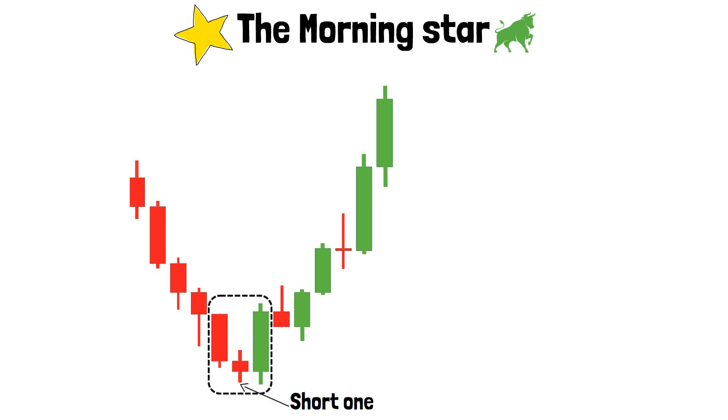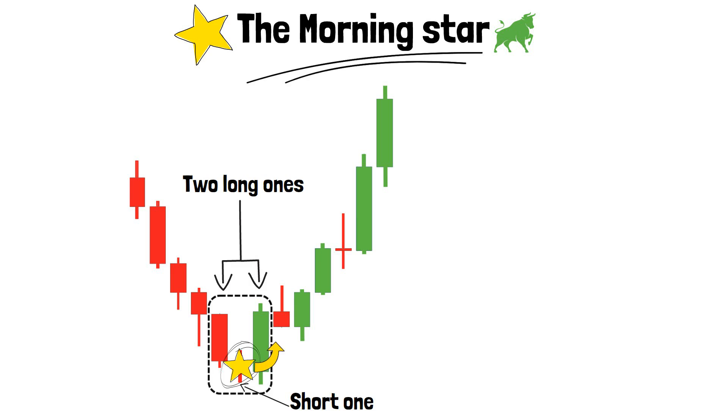The morning star is yet another important bullish pattern. It's formed by three candlesticks, one short candle between two long ones. The way this pattern is called implies that the short-bodied candle is the star that is rising, and thus, ending the night, AKA a downwards trend.